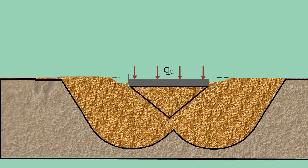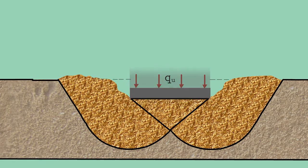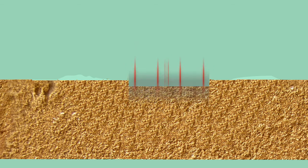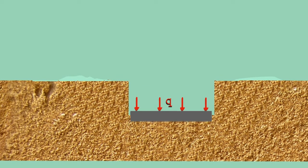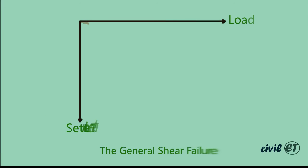Second is the local shear failure, which happens in medium and loose sand. Third is the punching shear failure. We explained that settlement increases as the load increases until it reaches the point